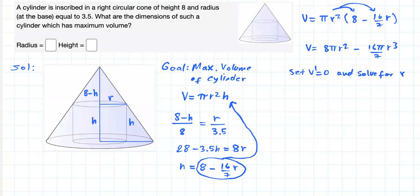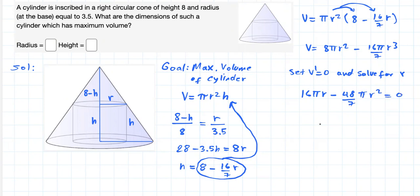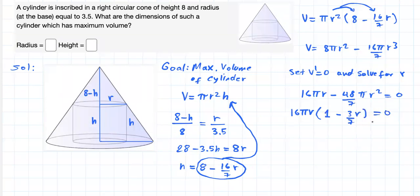Now we have to set the derivative of our volume function equal to 0 and solve for r. That will give us a serious candidate to maximize the volume of this cylinder. The derivative is 16 pi r minus (48 over 7) pi r squared equals 0. Factoring out 16 pi r, we get 1 minus (3/7) r equals 0.